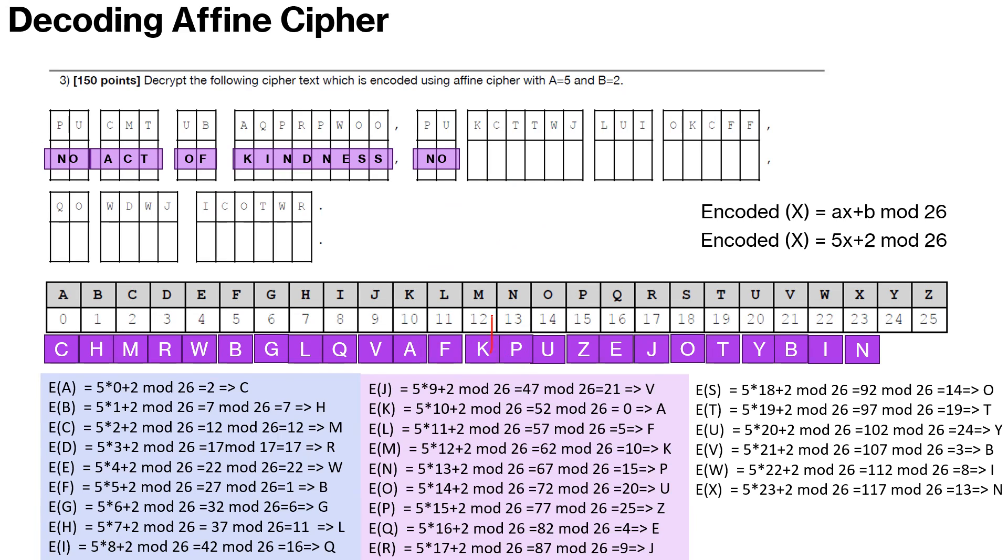Again PU is NO we have already found that. NO ACT OF KINDNESS NO M, it's K, so we're looking for K. K is M. And C is A, so M-A-T-T. So there are two T's. T results to T. So NO MATTER.